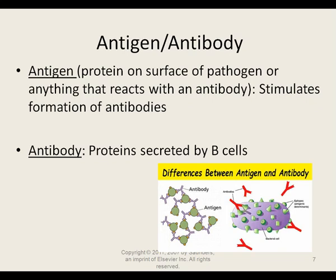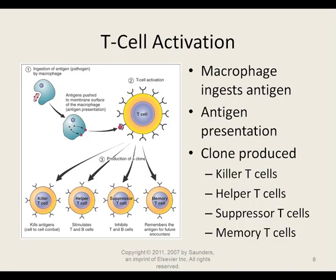Looking at the picture, the giant purple bacterial cell has green shapes sticking off of it — those are the antigens. The red Y-shaped structures are the antibodies, and the antibodies are attaching to the antigens. T cells and B cells are both involved in specific immunity and are both classified as lymphocytes — produced in the bone marrow but maturing in the lymphatic system.